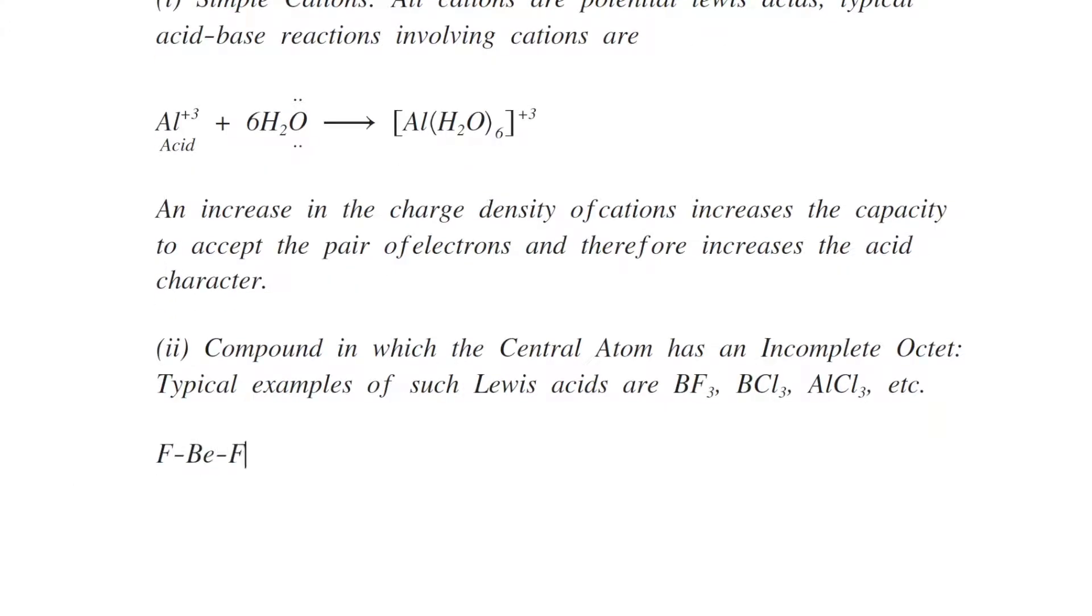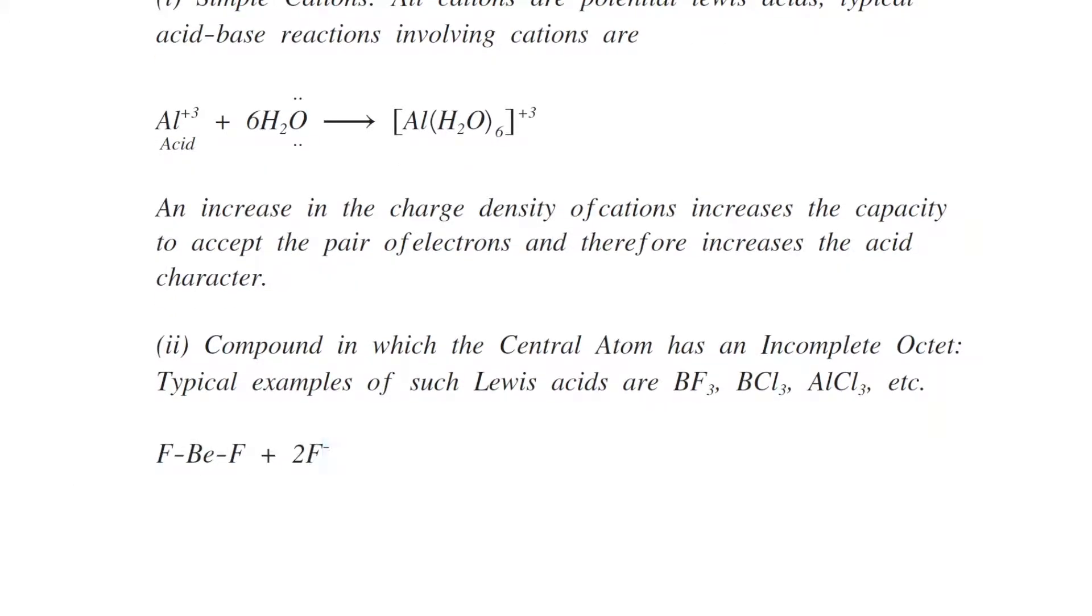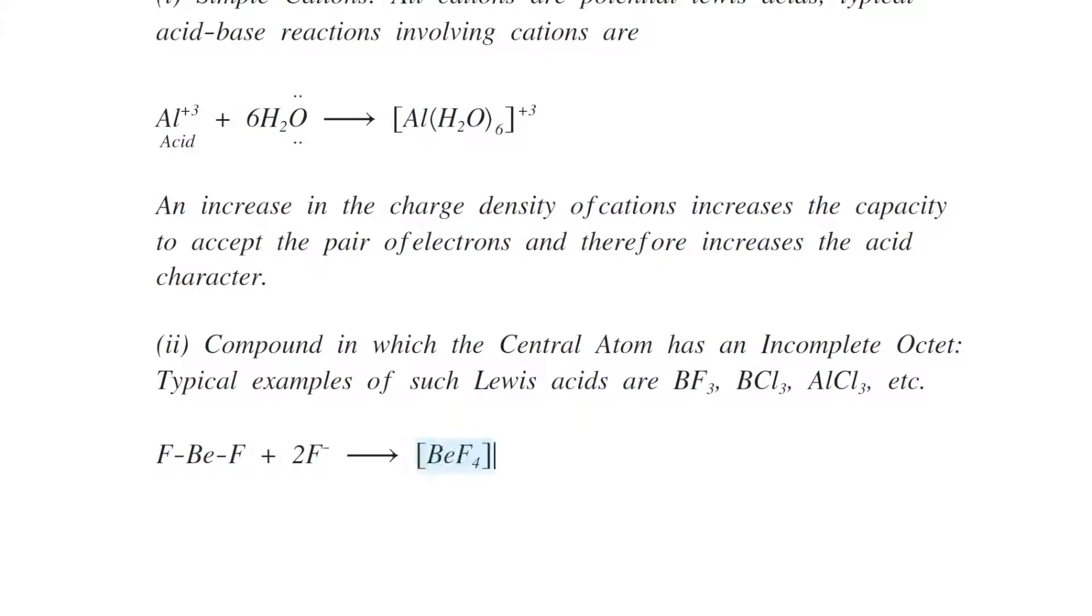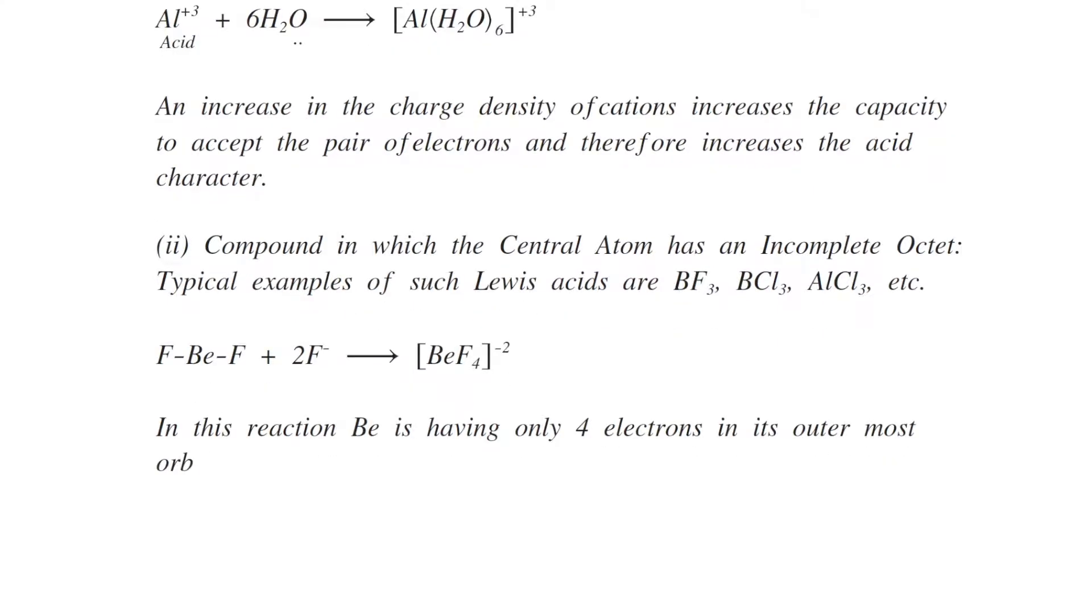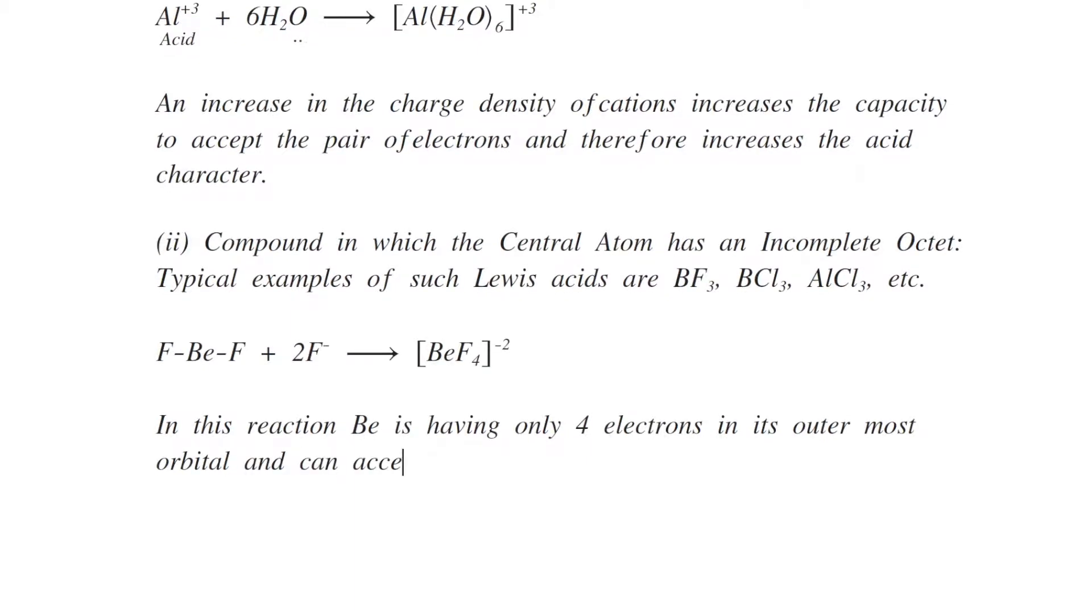Beryllium difluoride reacts with 2 moles of fluoride ions producing beryllium tetrafluoride minus 2. In this reaction beryllium is having only 4 electrons in its outermost orbitals and can accept two pair of electrons from fluoride ions. Therefore it behaves as acid and fluoride ions behave as bases.